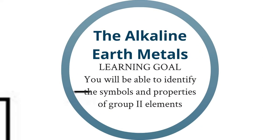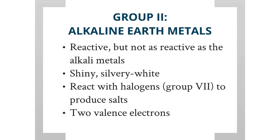You will be able to identify the symbols and properties of group 2 elements. The group 2 elements are called the alkaline earth metals. They're reactive but not as reactive as the alkali metals. They're a lot harder than the alkali metals and they're shiny and silvery white. Importantly, they also react with halogens, group 7, to produce salts. The alkaline earth metals have two valence electrons.